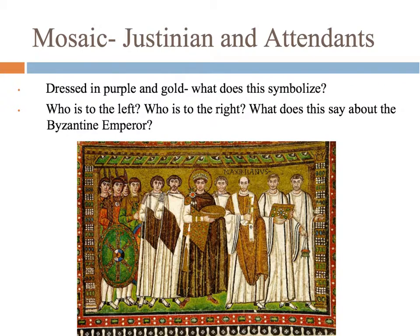The Byzantines are really known for their artwork with very specific styles. Here's a mosaic of Justinian and his attendants. Justinian is in the middle, dressed in purple and gold — the colors of royalty. On the far left are military people, and on the far right are priests with the different things needed to give the sacraments. What does that say about Justinian as a leader? In the Byzantine Empire, the emperor is in charge of everything — not just the military. He's in charge of religion and enforcing Christianity as well.